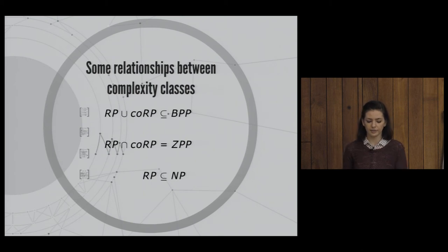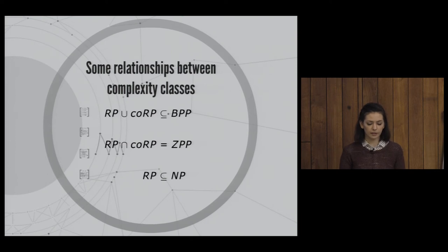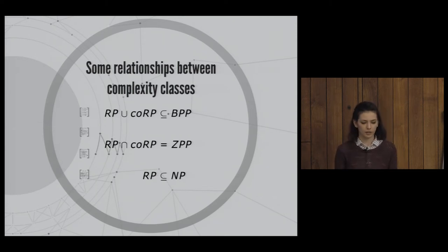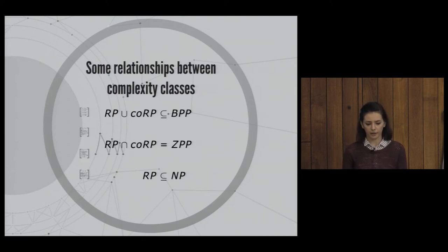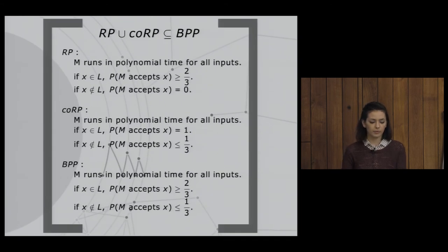Now some relationships between these classes. First, RP ∪ co-RP is contained in BPP, meaning both RP and co-RP are in BPP. Then, more interestingly, RP ∩ co-RP equals ZPP. Note that co-RP is the complement of RP — the languages whose complements are in RP.